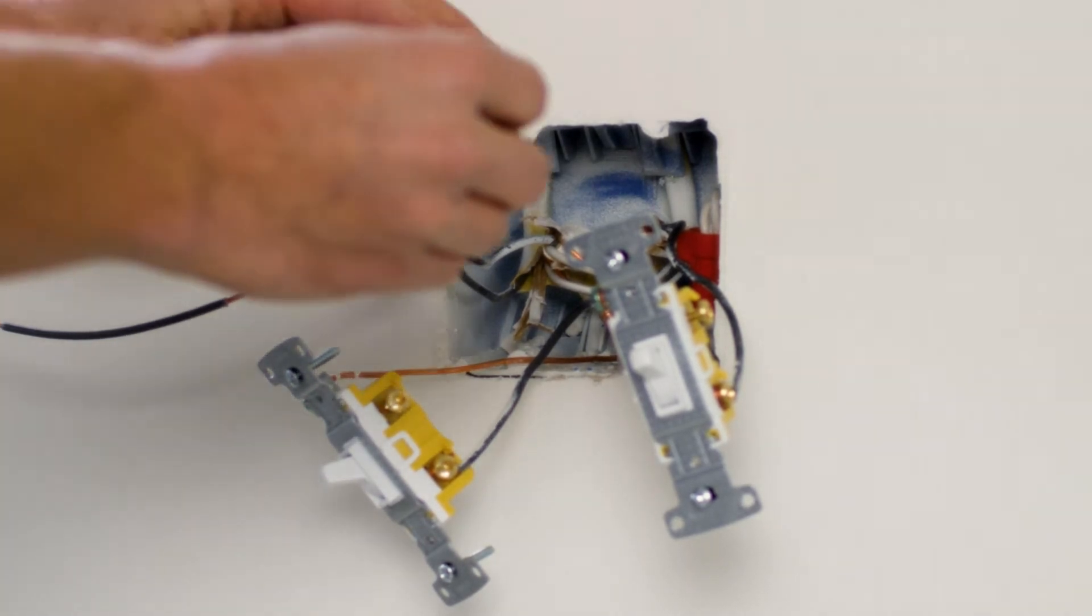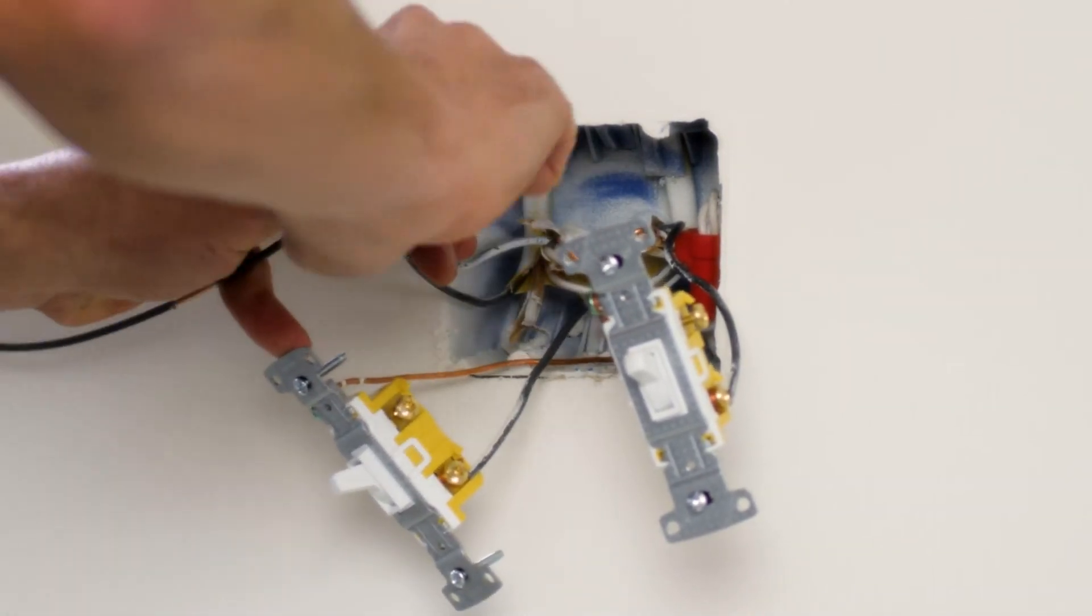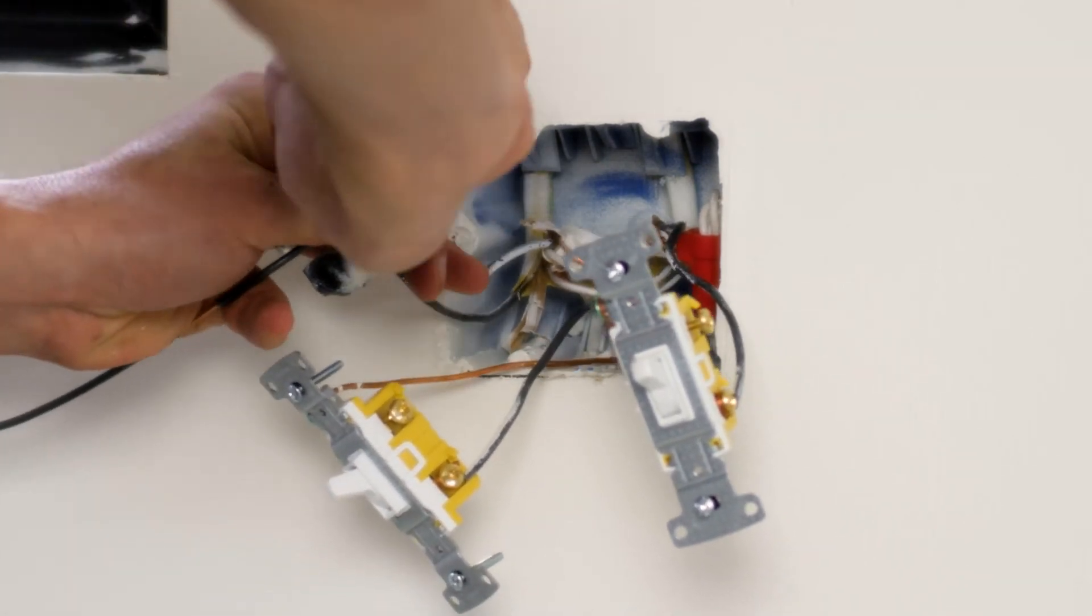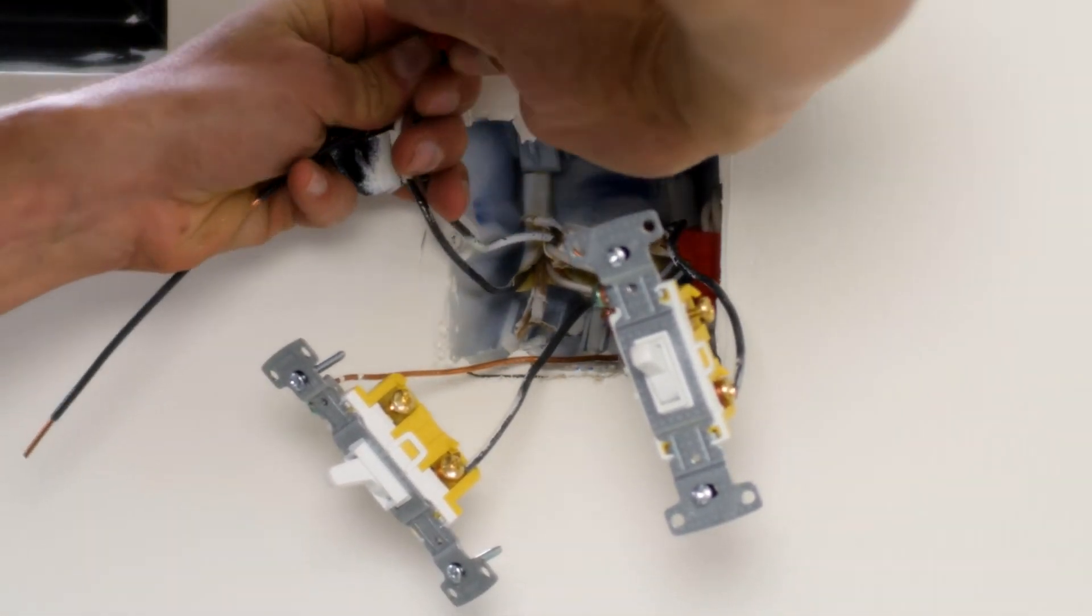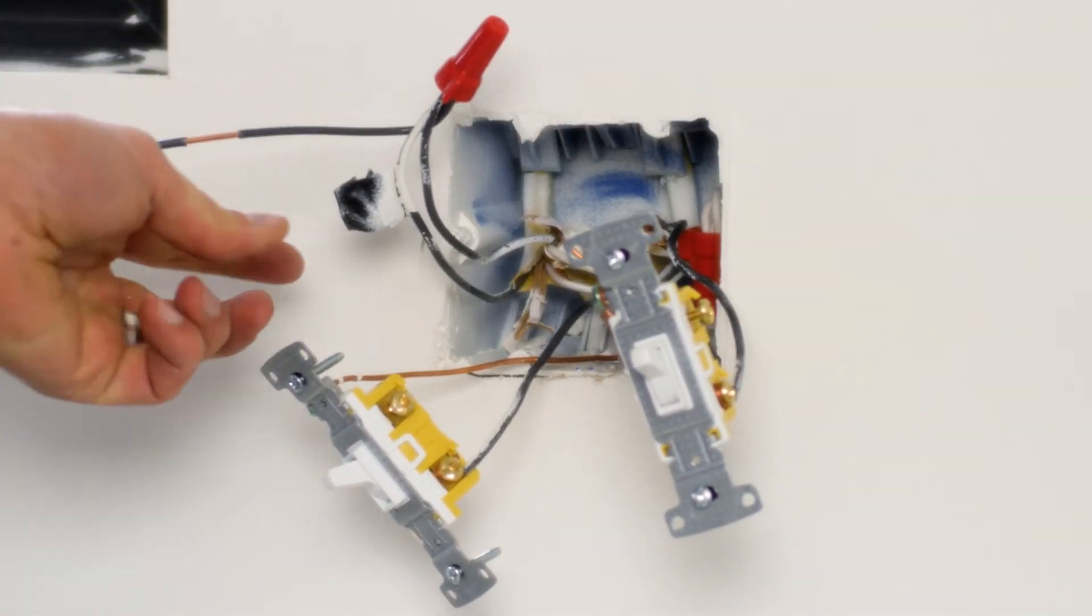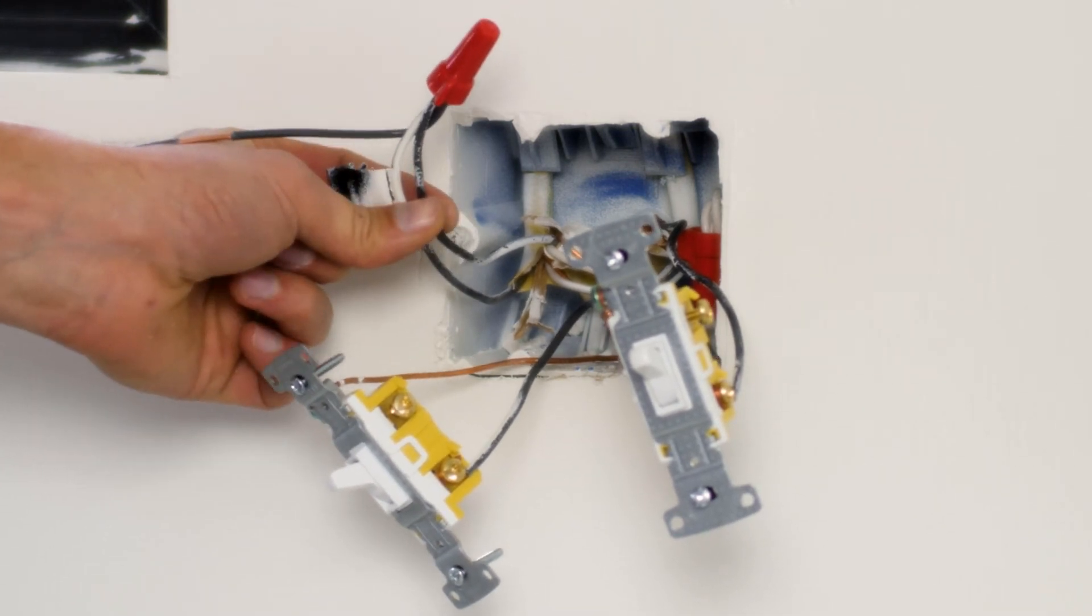Red wire nut from my part supply pouch here, 10 to 12 turns in the clockwise direction. And now my hot coming in has energized the feed to my dishwasher.